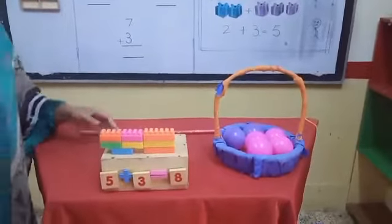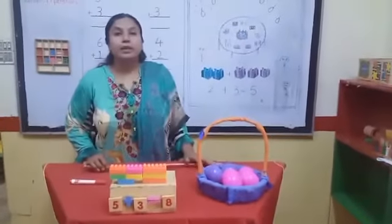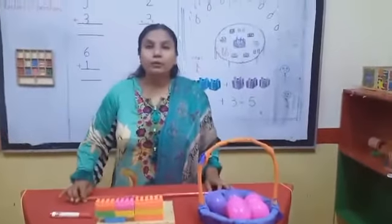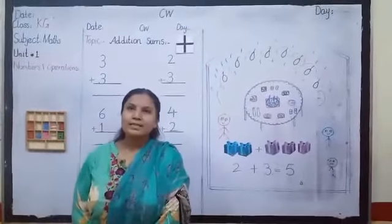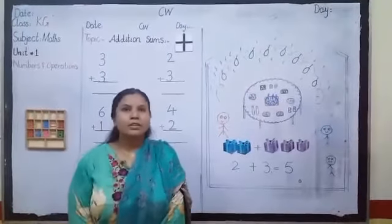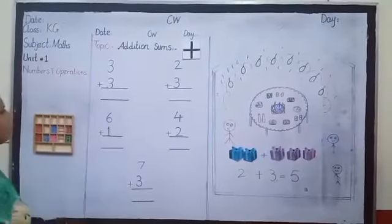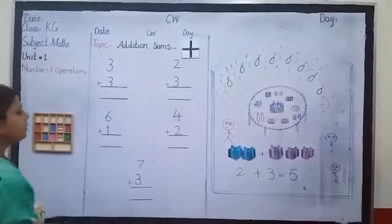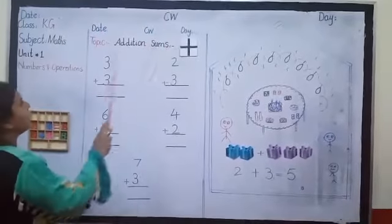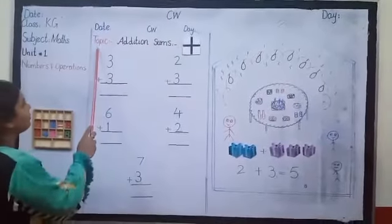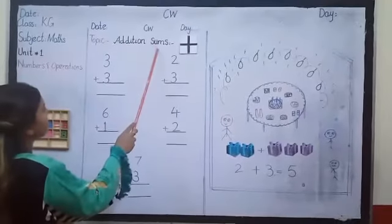So students, in this same way today we will do our copy work. So take out your notebook and prepare your page. Now take out your notebooks and prepare your page same like this. You have to draw a margin line and then write date, C, W and date. And then you have to write the topic. Today's topic is addition sums.